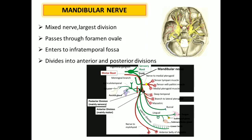The mandibular nerve is the largest of the three divisions and is a mixed nerve containing both sensory and motor fibers. After arising from the trigeminal ganglion, it passes through the foramen ovale into the infratemporal fossa, where it divides into anterior and posterior divisions.